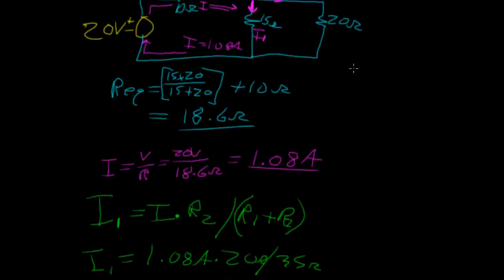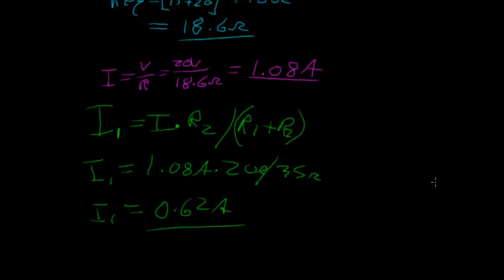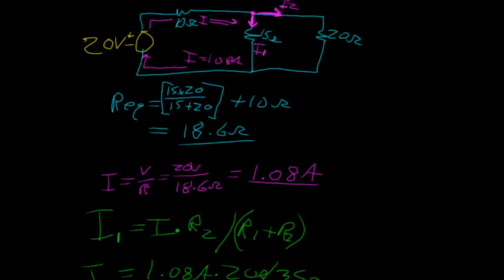So the current flowing through our 15 ohm resistor, our first branch, is 0.62 amps.